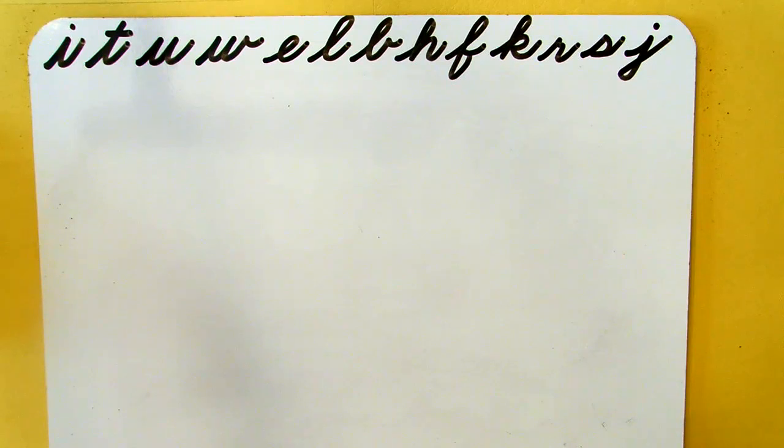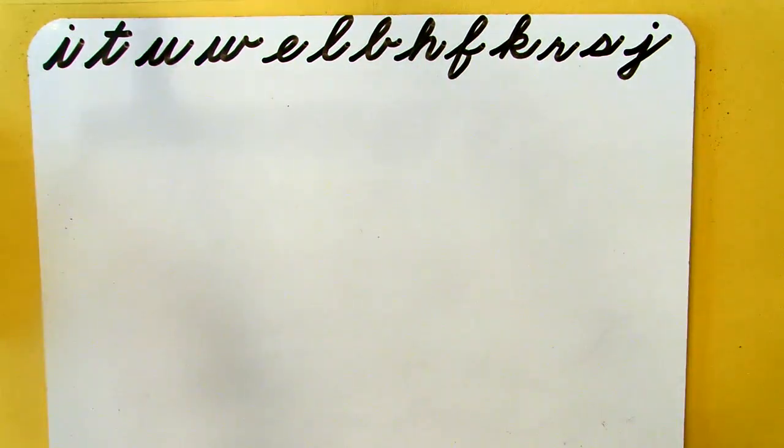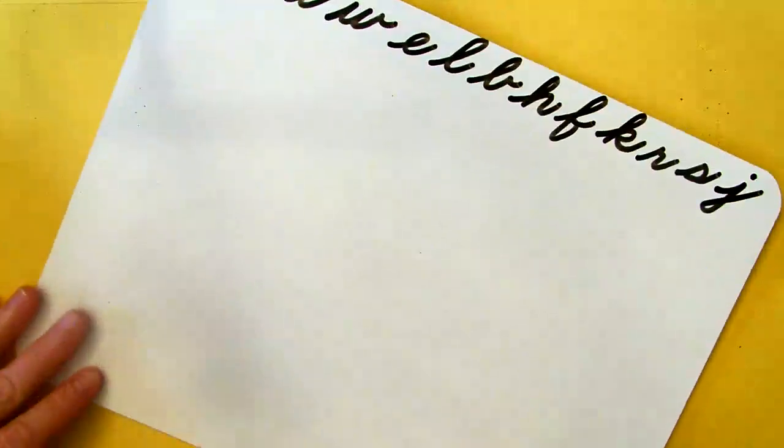So before we start today, I just want to remind you to get yourself ready by having a blank piece of paper or a whiteboard. You should always practice on a blank piece of paper first until you are comfortable with the shape, and then make sure you're sitting up nice and tall, and your board is slanted. If you're a righty, it slants this way to the right, and if you're a lefty, it slants towards your body to the left.